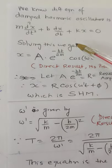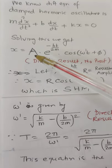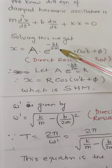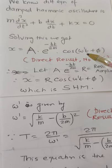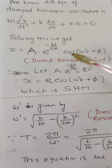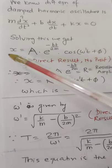No proof of it. Solving this we get x = A·e^(-bt/2m)·cos(ω't + φ). Remember, direct result, no proof. That means you have to learn by heart.